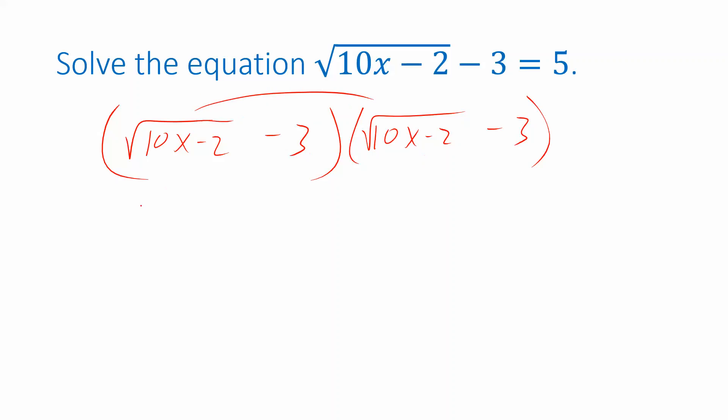This times this is 10x minus 2. But this times this is negative 3 times the square root of 10x minus 2. And so on. And you'll notice that taking this approach still leaves us with a square root symbol after we try to simplify. So we definitely don't want to square both sides yet. We have to move that minus 3 out of the way before we attempt any squaring.